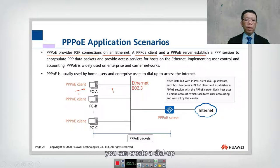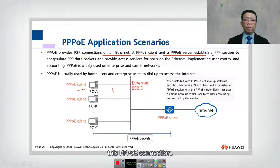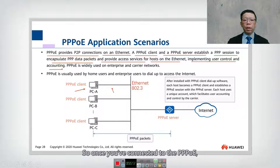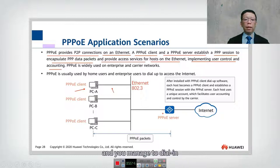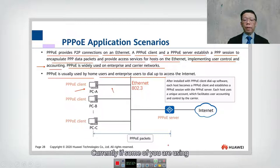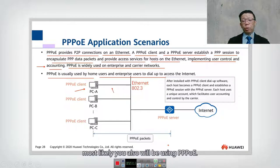In Windows, you can go to Control Panel Network and create a dial-up connection — this creates a PPPoE client. The PPP session encapsulates PPP data packets and provides access service for hosts on the Ethernet, implementing user control and accounting. PPP has authentication, so when you connect via PPPoE your credentials are verified, and then accounting begins — the service provider charges you for data used. PPPoE is widely used by home users and enterprises for dial-up to the internet, including ADSL, XDSL, and Fiber connections.